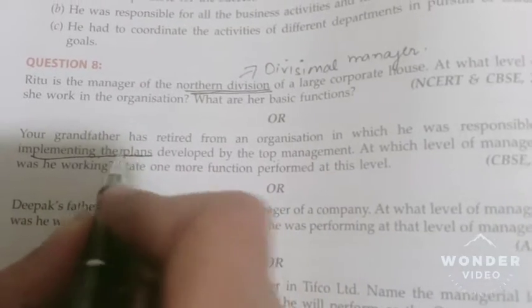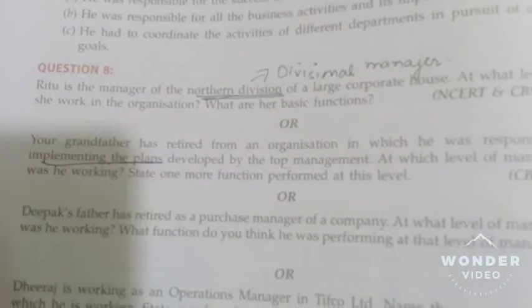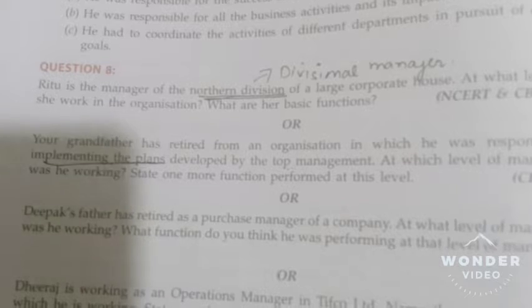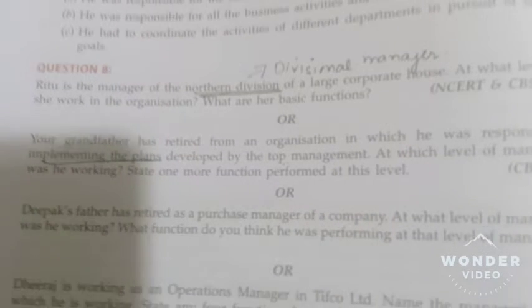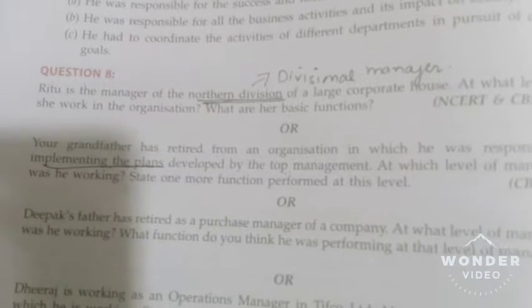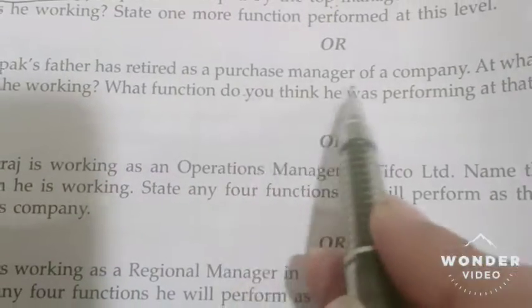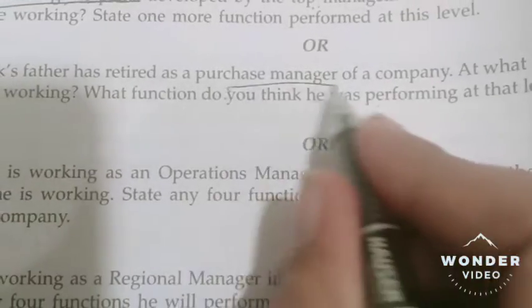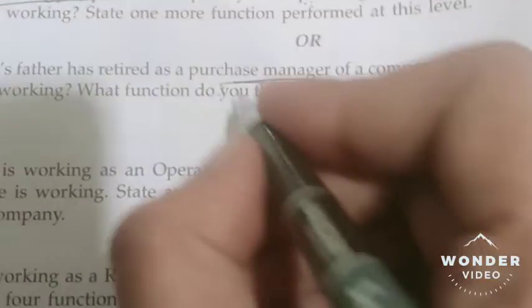Then, your grandfather has retired from an organization where he was responsible for implementing the plans prepared by the top management. Top management prepares the plans, and your grandfather had to implement them — that places him at the middle level. Next, Deepak's father has retired as a Purchase Manager. Purchase is a department, and he is a department manager.